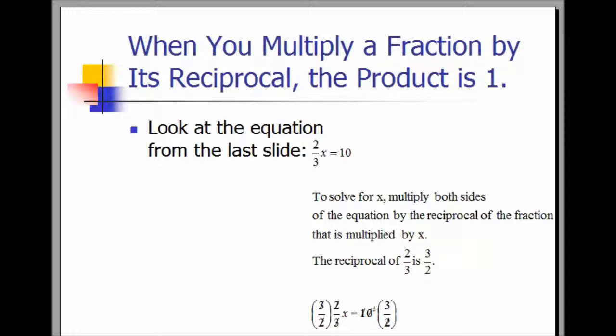Look at the equation from the last slide: two-thirds x equals 10. To solve for x, multiply both sides of the equation by the reciprocal of the fraction that is multiplied by x. In this example, the reciprocal of two-thirds is three-halves. We multiply both sides by three-halves.